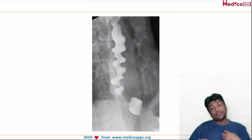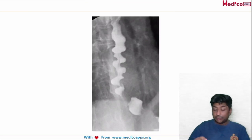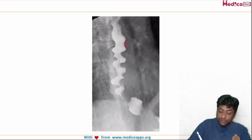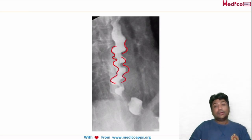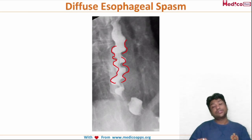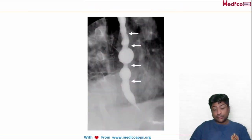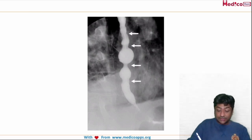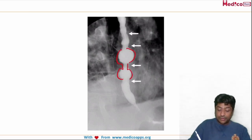Again, a history of dysphagia and chest pain in a relatively younger patient will be given to you, and then you do a barium swallow. What you are seeing here is a typical corkscrew appearance, and this establishes our diagnosis of diffuse esophageal spasm.